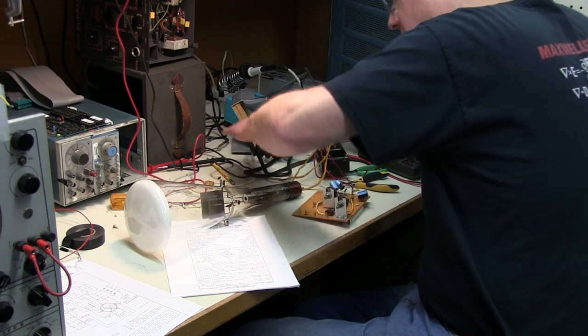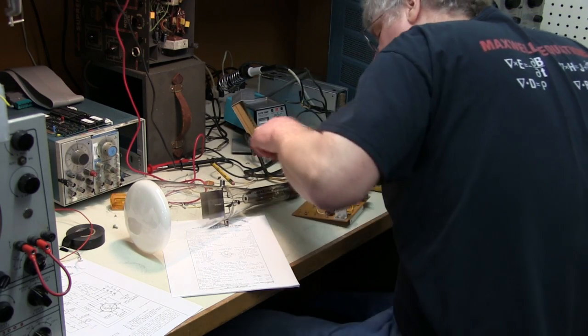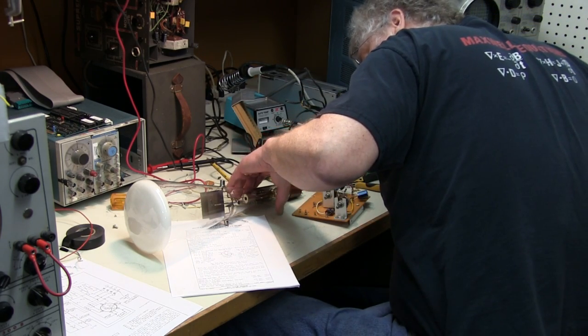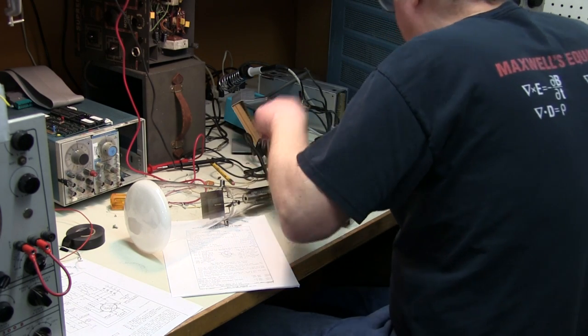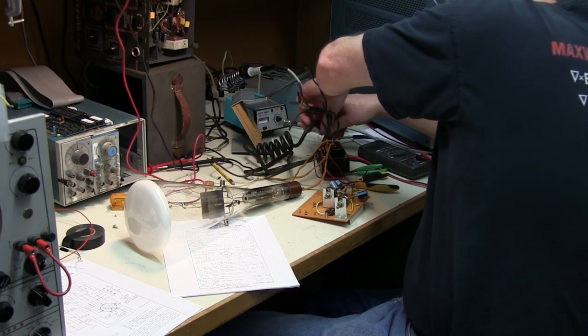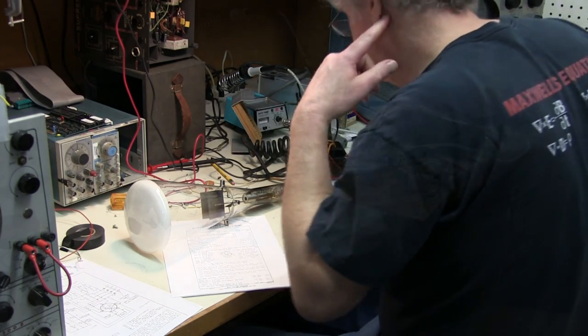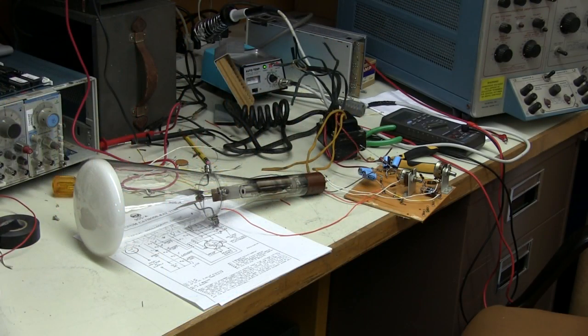Here I am firing up the CRT for the first time, checking for the glow of the filament. It has a 2.5 volt 2 amp filament. The power transformer had a 5 volt center tap winding for a rectifier, so we used half of that winding for the 2.5 volts for the CRT filament.